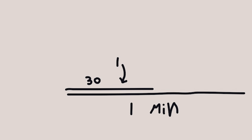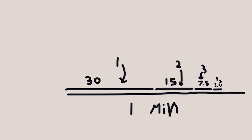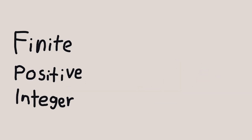We count to 1 in 30 seconds, say 2 in 15 seconds, 3 in 7.5 seconds, 4 in half as much as that, 5 in half as much as that, and so on. After one minute, we will — theoretically at least — have said every single number in only one minute. We just said every single finite positive integer.